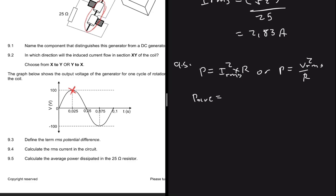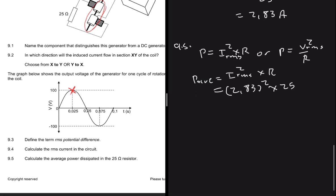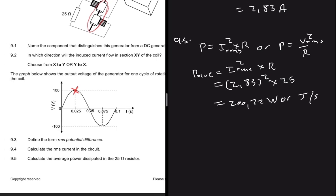If we go ahead and do that we're gonna have power average being equals to I_rms squared multiplied by the resistance. Our I_rms is 2.83 and then we square it and multiply by 25. That would give you a value of 200.22 watts or joules per second.